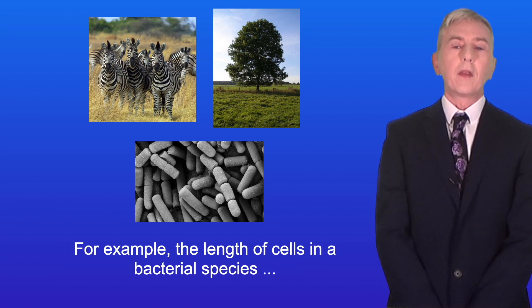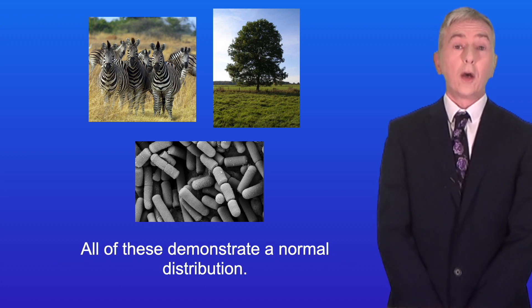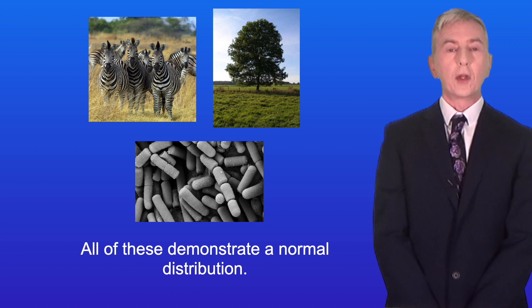For example, the length of cells in a bacterial species, the mass of animals in a population, or the number of leaves on a tree. All of these demonstrate a normal distribution.